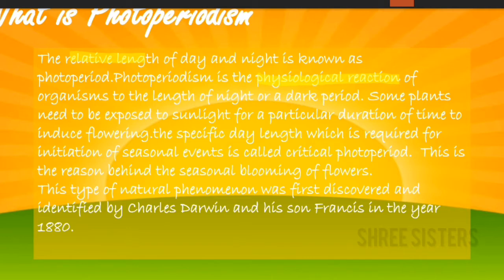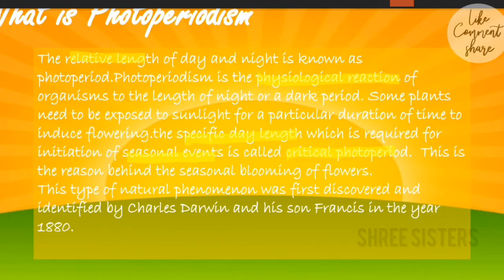The specific day length required for the initiation of seasonal events is called the critical photoperiod. For example, if a flower blooms when there are three hours of sunlight, then that is the critical photoperiod of that particular flower.